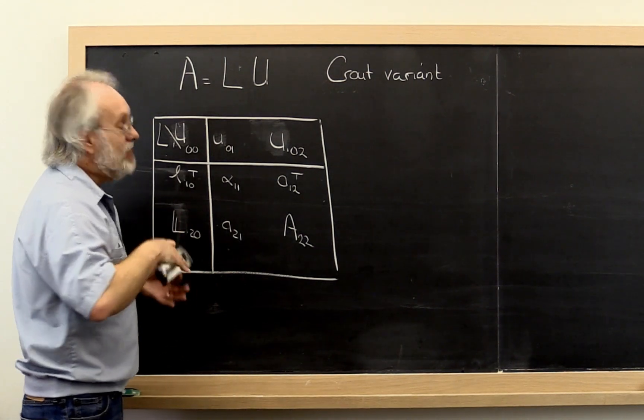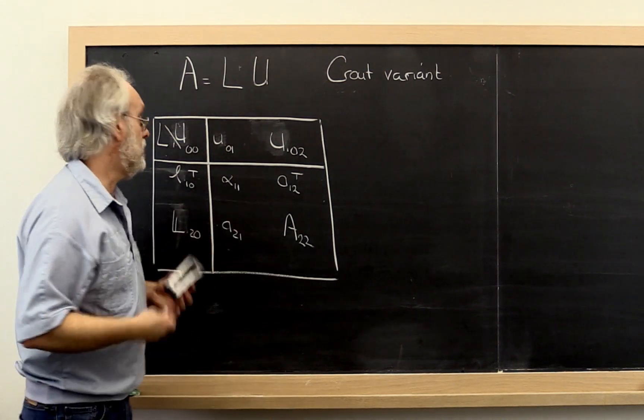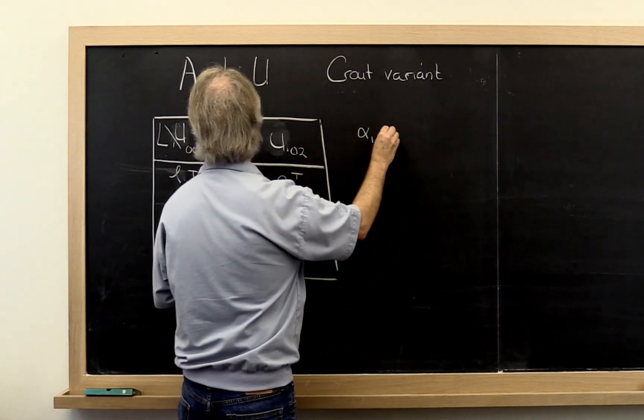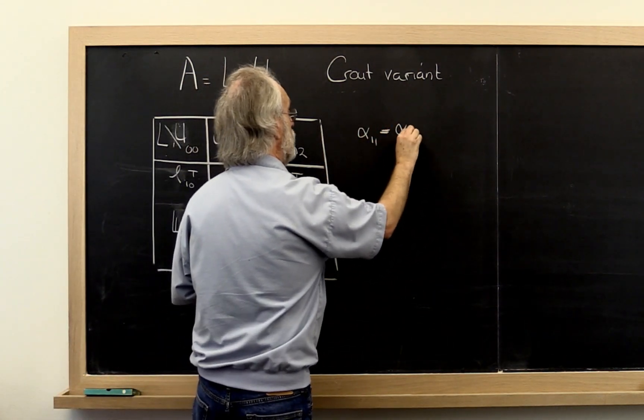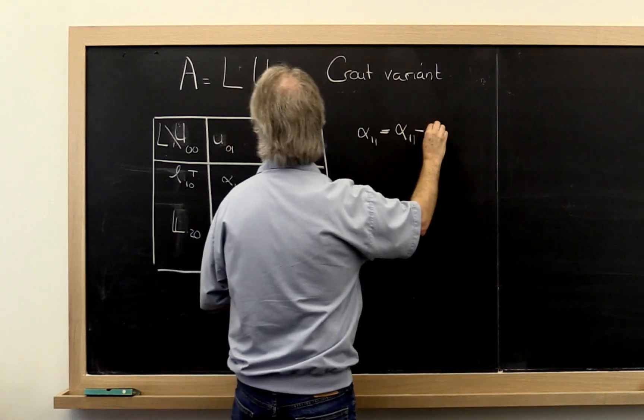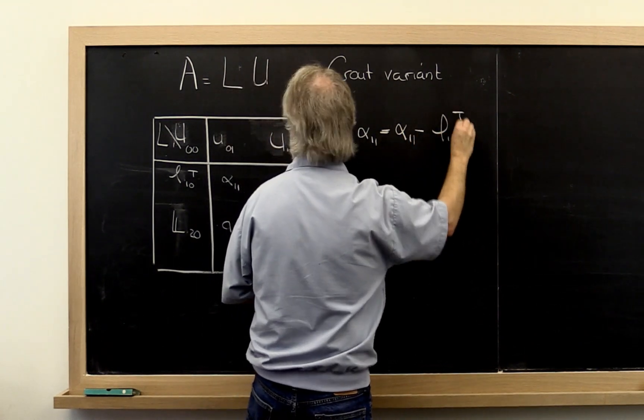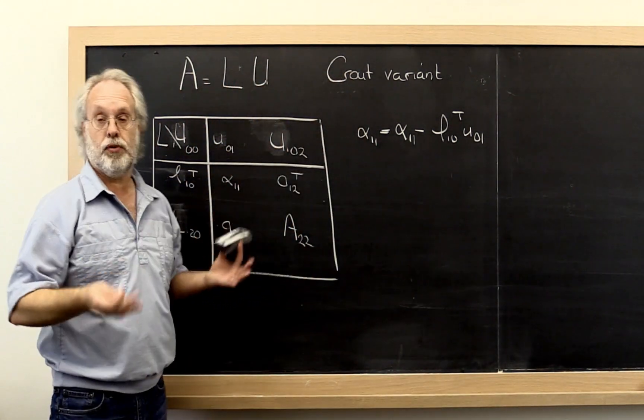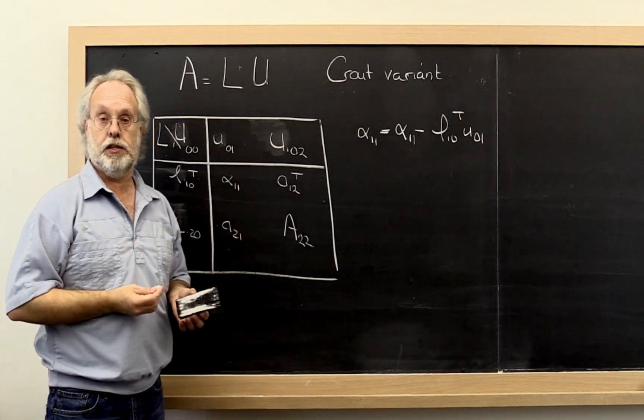If you work it out, the computations that need to be performed are that alpha 11 is updated by subtracting off L10 transpose times U01. That's a dot product. We have error results for that part.